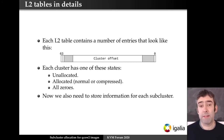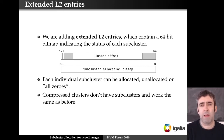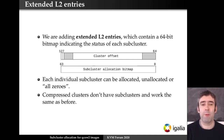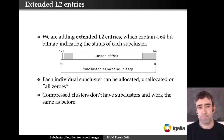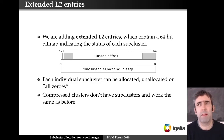To store sub-cluster information there's no space in the existing entry, so we added extended L2 entries, which are very similar to the existing ones but contain an additional bitmap indicating the status of each sub-cluster. With this, each individual sub-cluster can be allocated, unallocated, or all-zeros. Compressed clusters cannot be divided into sub-clusters, and anyway it doesn't make much sense to use compression with extended L2 entries because they are different use cases.